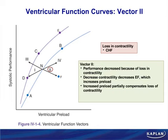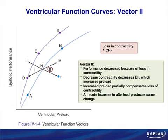You can stop a heart cold if you overdose someone on a drug like phenylephrine — an alpha agonist — because there's just too much afterload. So moving from N to F is a loss in contractility and/or an increase in afterload, i.e., peripheral vasoconstriction.